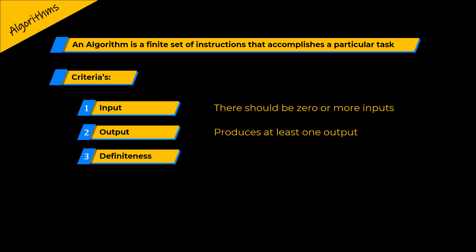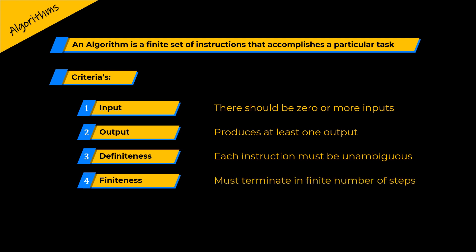The third criteria is definiteness and feasibility. That is, each step or instruction must be clear and feasible. The fourth criteria is finiteness. When an algorithm is executed, then in all cases, the algorithm must terminate in a finite number of steps.